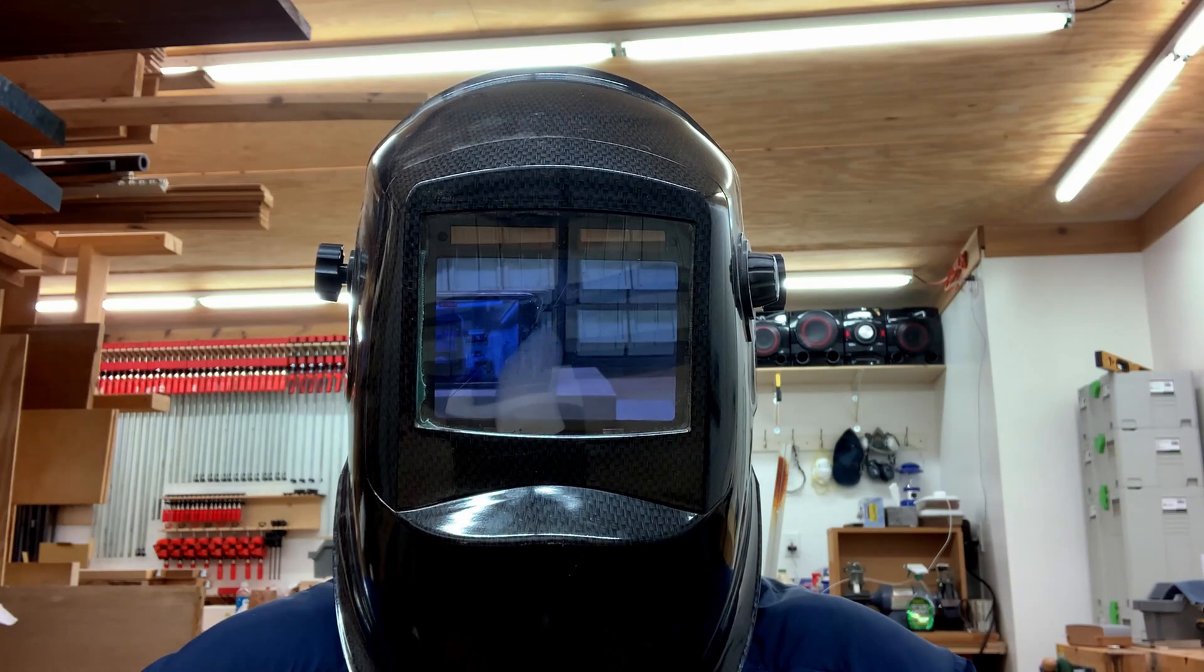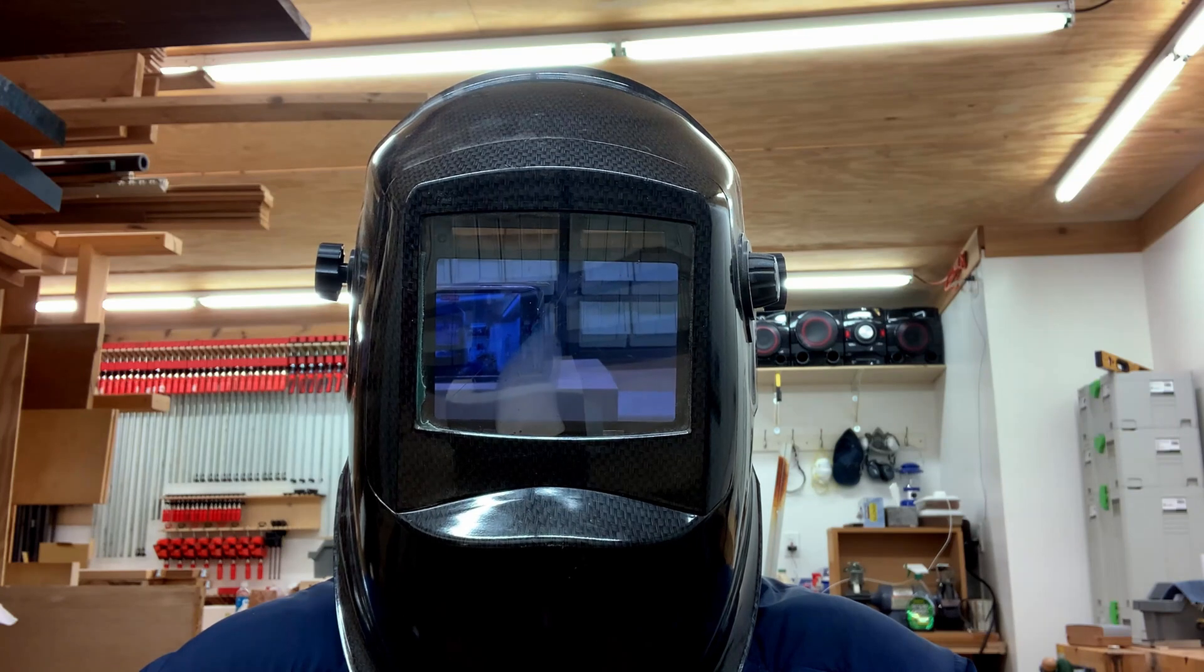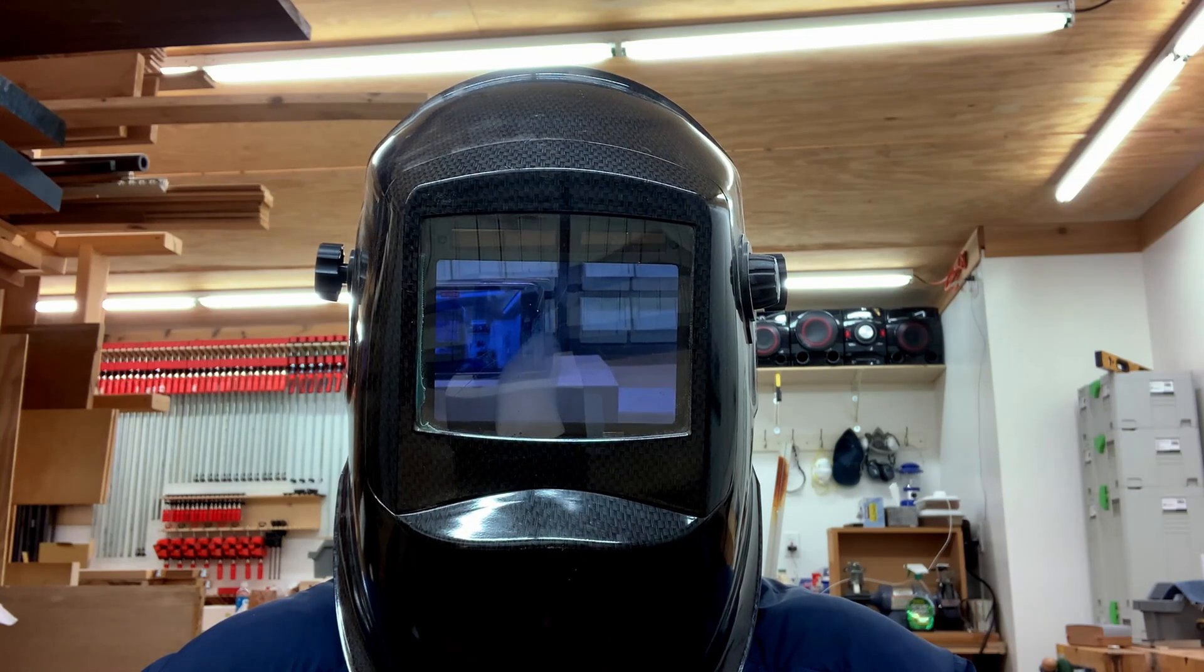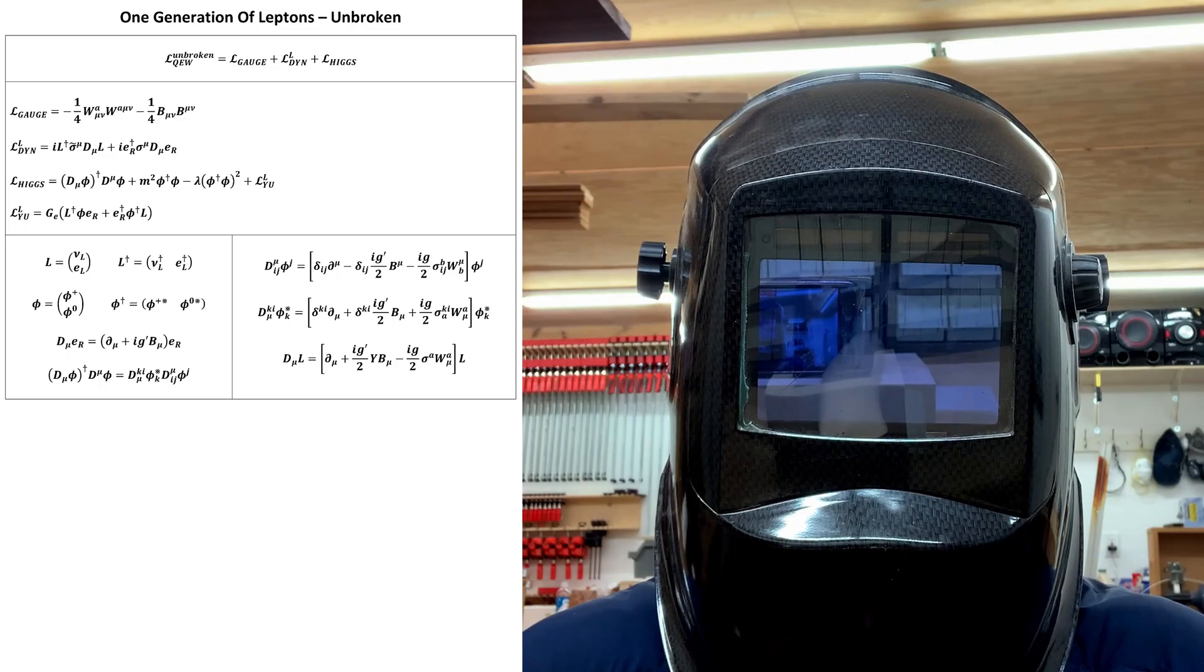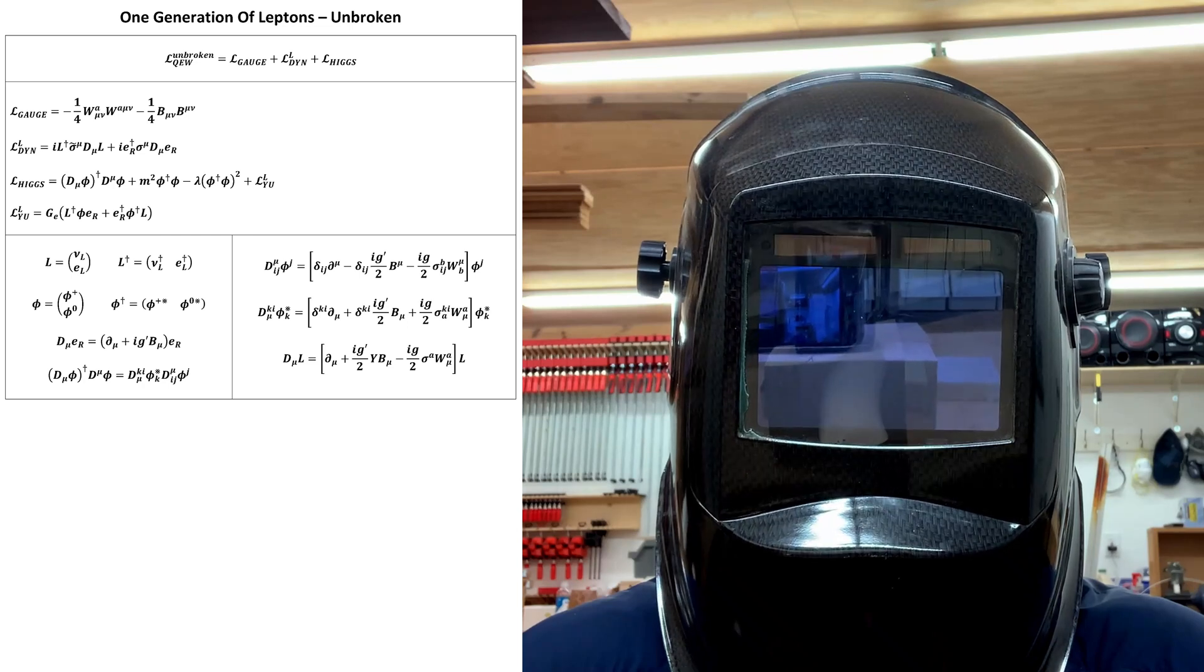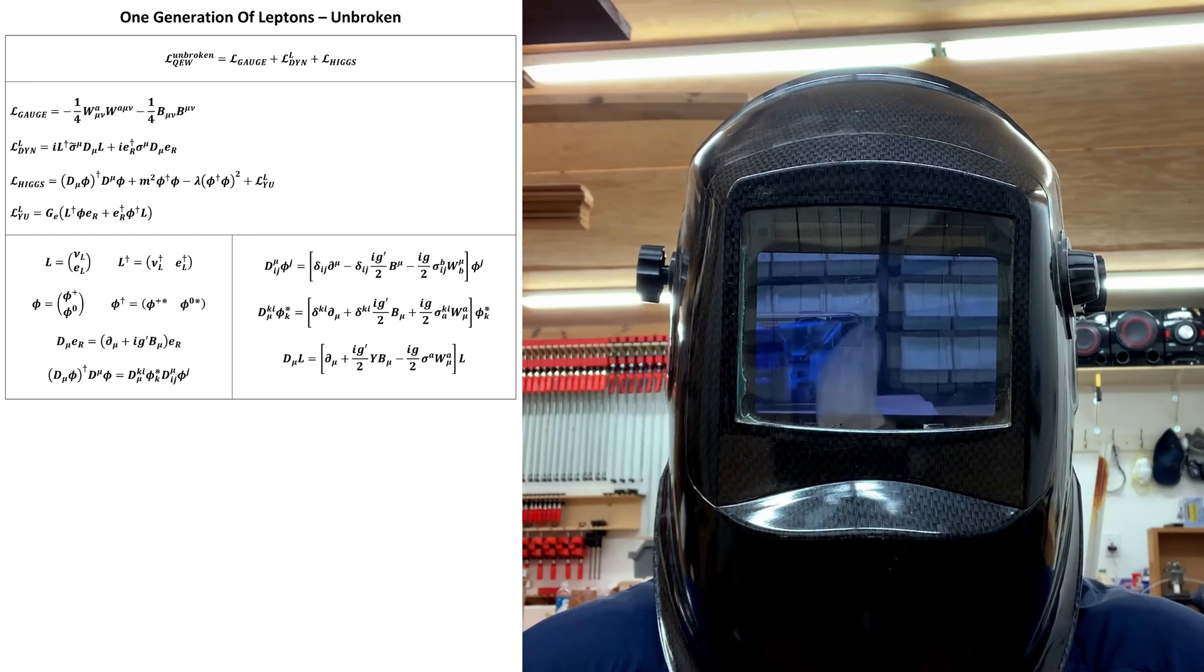First, let's remember where we left off in the last video. The unbroken QEW Lagrangian that we had for one generation of leptons was this, and the corresponding spontaneously broken Lagrangian density that it yielded was this.